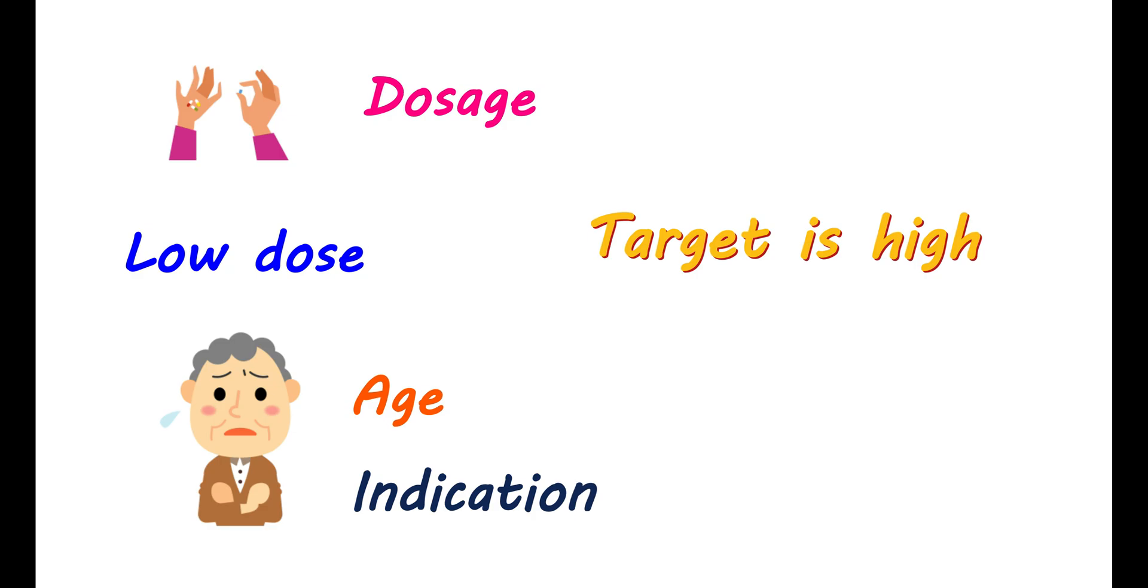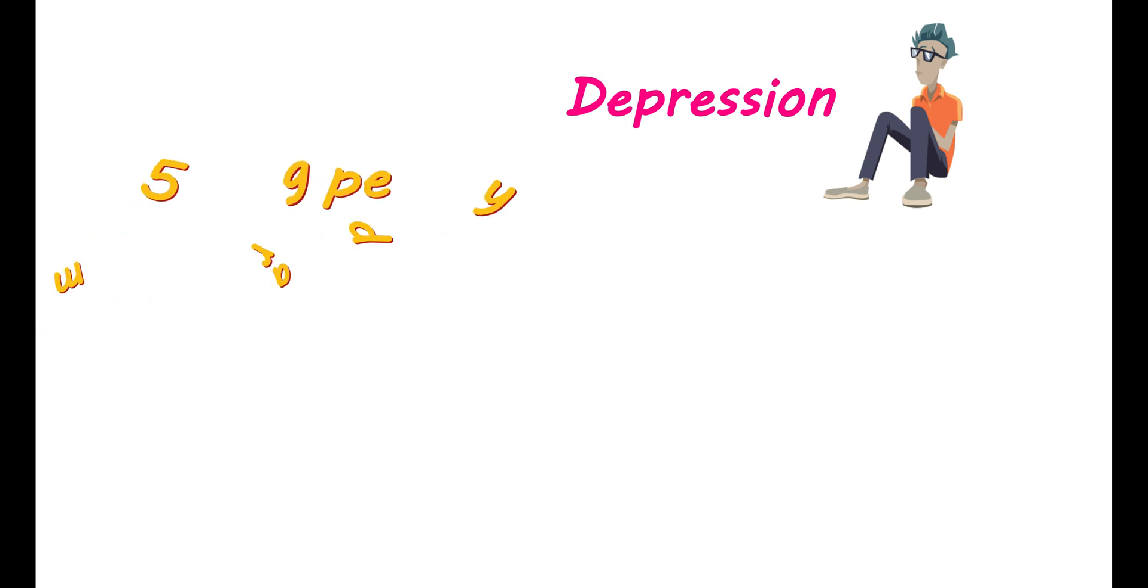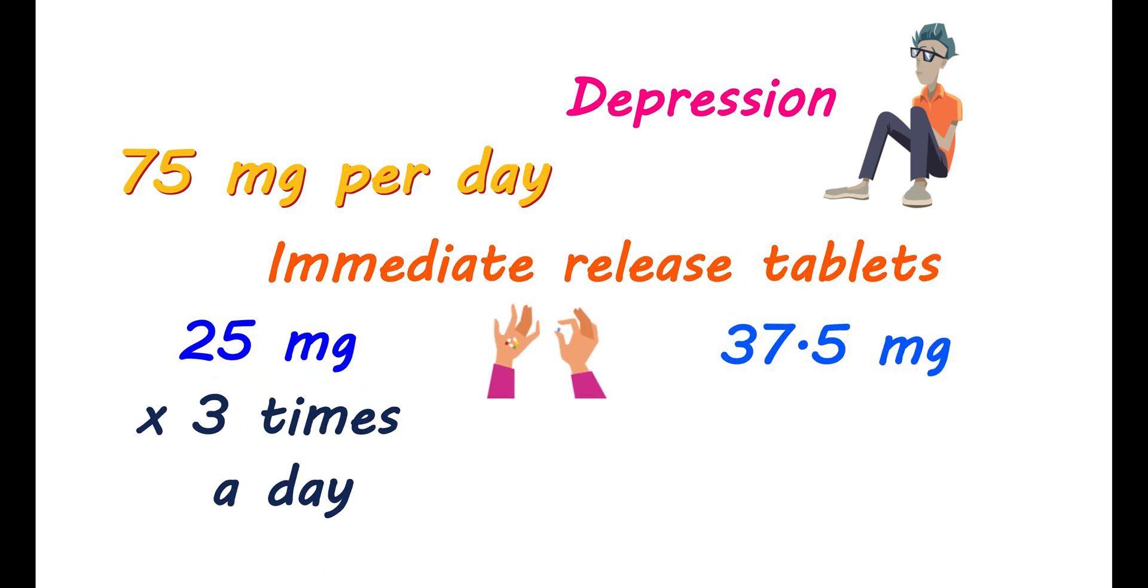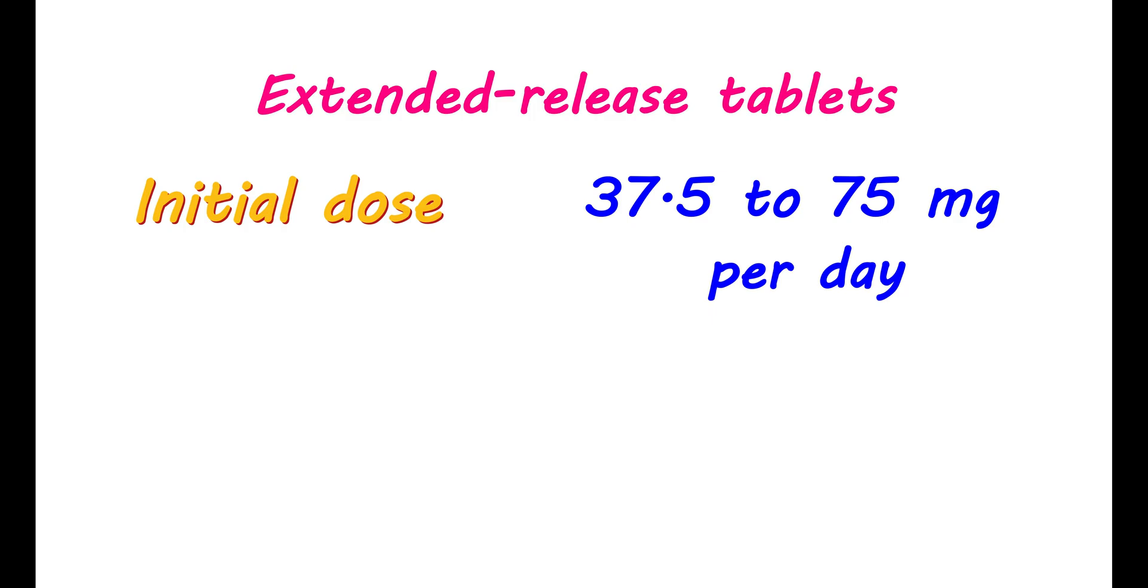Dosage of venlafaxine is variable on many factors. Even though the target is high, it should always be started at a very low dose to minimize side effects. Never start venlafaxine at higher doses than recommended. Since the dose used is variable in individuals based on their age and indication, always follow the dose and frequency as suggested by your doctor. For treating depression, it can be started at a dose of 75 mg per day. It can be given in divided doses: 25 mg immediate release tablets three times a day or 37.5 mg immediate release tablets two times a day. In both cases, the net dose is 75 mg per day.